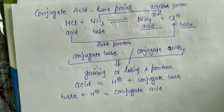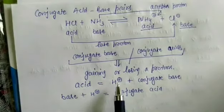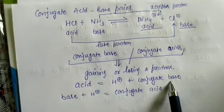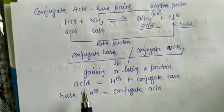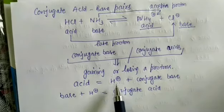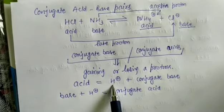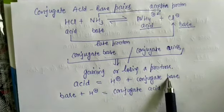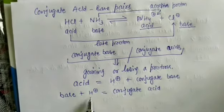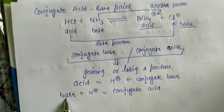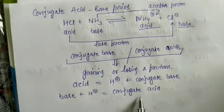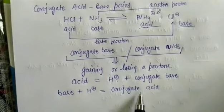To summarize: in the Bronsted-Lowry concept, an acid gives a proton and is called the conjugate base — for example, HCl releases its proton leaving chloride as the conjugate base. A base accepts a proton and forms its conjugate acid — for example, ammonia accepts a proton to form ammonium ion, which is its conjugate acid.